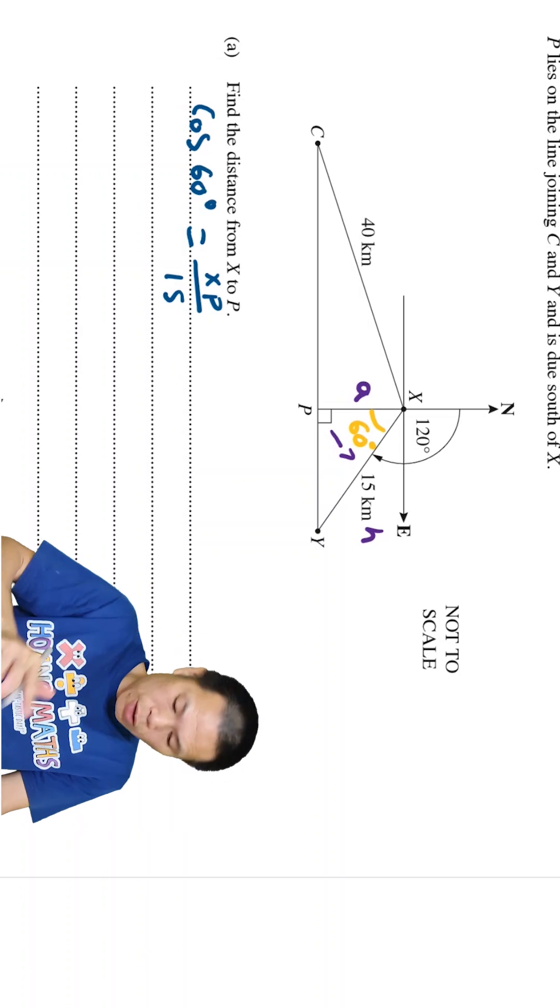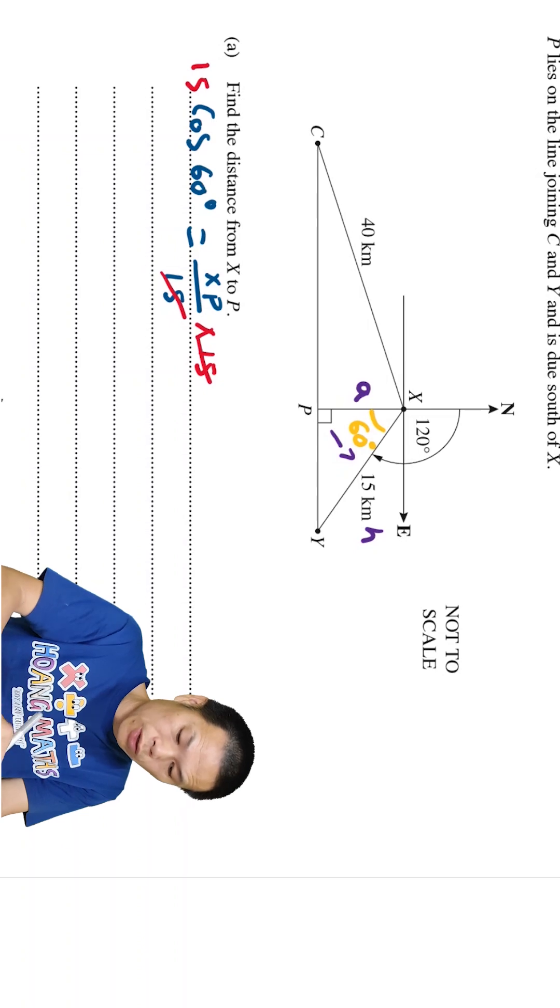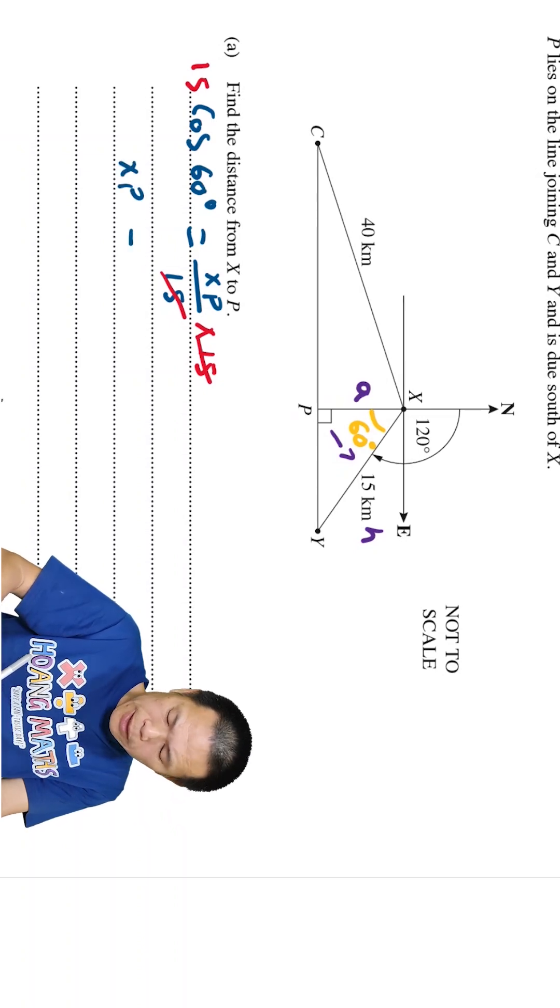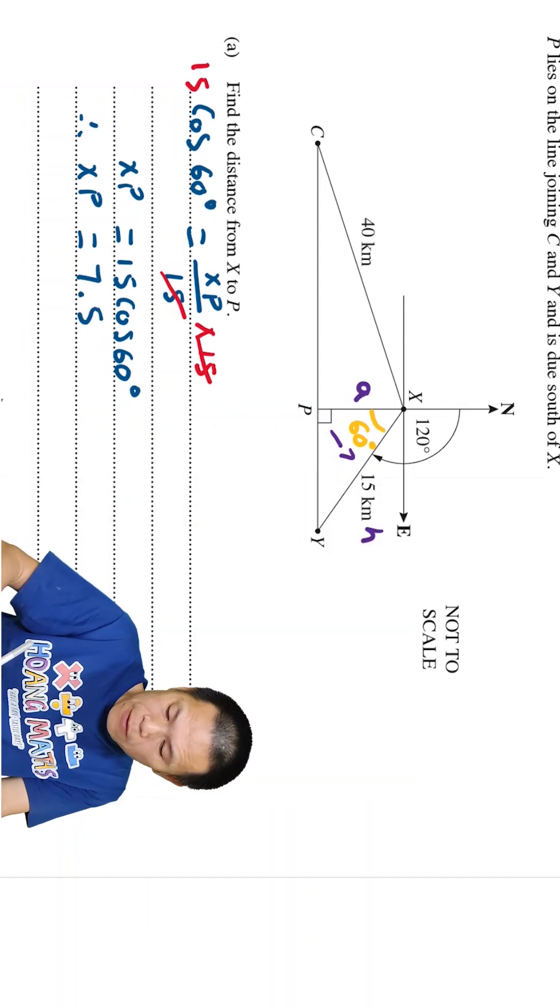So if I times 15 on both sides, that cancels out. So that is xp. xp is 7.5, so 7.5 kilometers.